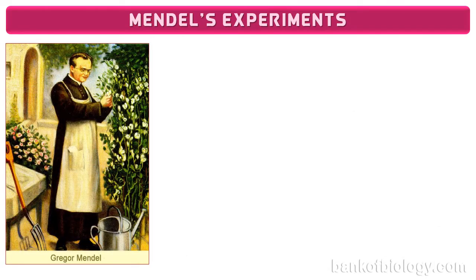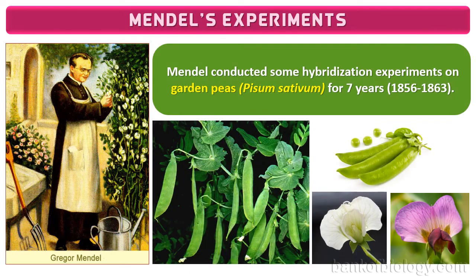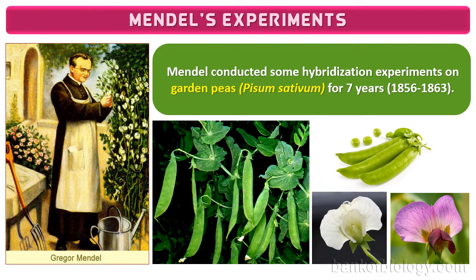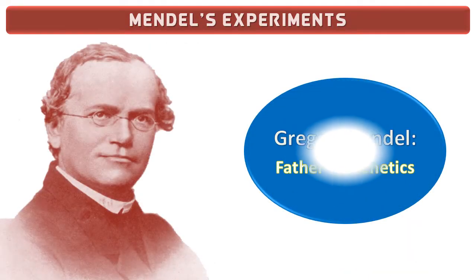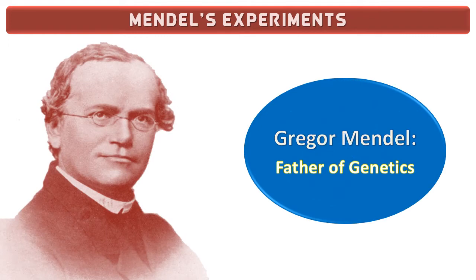Who was Gregor Mendel? He was a monk in a church in Austria. He was also a teacher and interested in growing and caring for various plants in a garden. He conducted some hybridization experiments on garden peas, i.e. Pisum sativum, for 7 years. These experiments gave the foundation to a new branch in biology known as genetics. So Mendel is considered as the father of genetics.